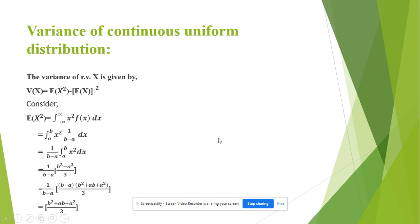The next term is variance of continuous uniform distribution. By definition, the variance of a random variable X is given by Var(X) equal to E(X²) minus [E(X)]². Now we have already calculated the expected value of X which is the mean. Here we shall calculate the expectation of X square.